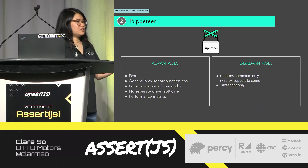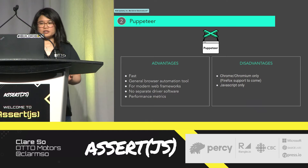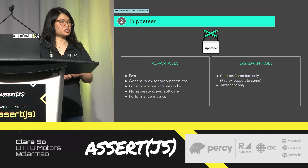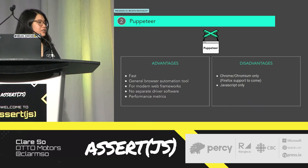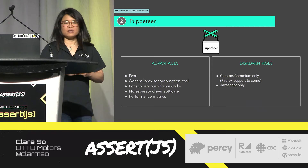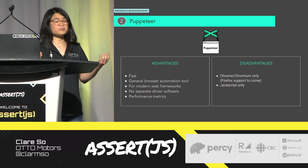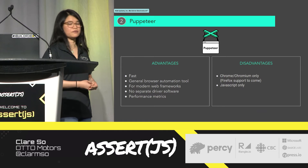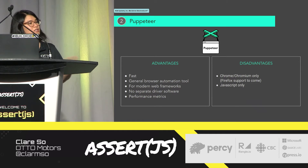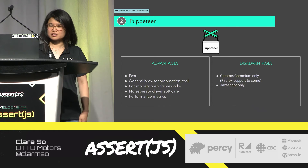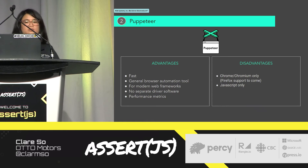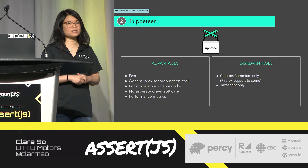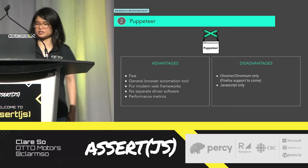Puppeteer can go under the hood of the browser — for example, we can fake the geolocation for a test. And Puppeteer has some useful tools: it can collect metrics such as memory usage, code coverage, as well as accessibility metrics. As of today, Puppeteer supports Chrome officially, and Firefox support is experimental at this point.